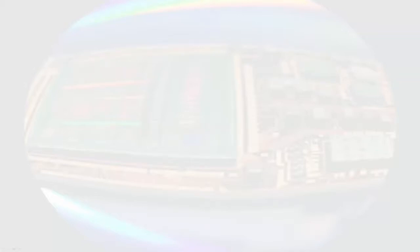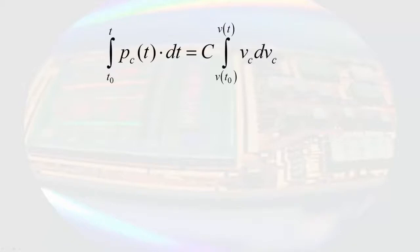A touch of ninja math sets us up to look at the following integrals, where we integrate from some initial time t zero to the time we're interested in. The integration of power with respect to time gives us the energy at time t minus the energy at the initial time.